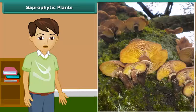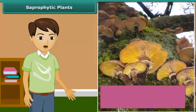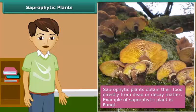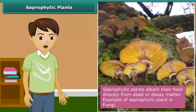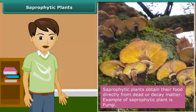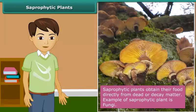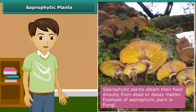These organisms are commonly called fungi and they get their nutrition from dead and decaying matter. To get their nutrients, they secrete digestive juice and convert it into a solution. This mode of nutrition, in which organisms take in nutrients in solution from dead and decaying matter, is called saprotrophic nutrition.